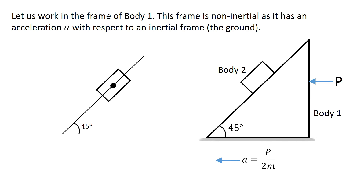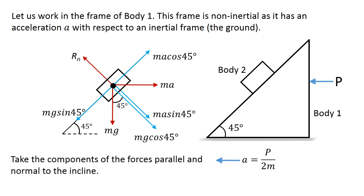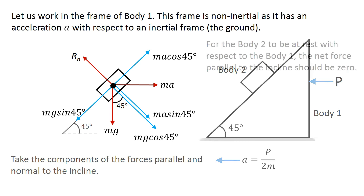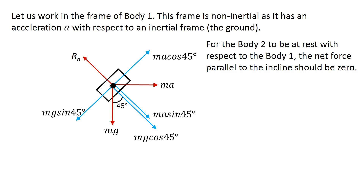Let us first solve this problem by working in the frame of body 1. This frame is non-inertial, as it has an acceleration a with respect to an inertial frame — the ground. In this frame, body 2 is at rest. The forces acting on body 2 in this frame are: contact force by body 1 normal to the incline, pull of the earth mg vertically downward, and pseudo-force ma towards right. Now take the components of the forces parallel and normal to the incline. For body 2 to be at rest with respect to body 1, the net force parallel to the incline should be 0.